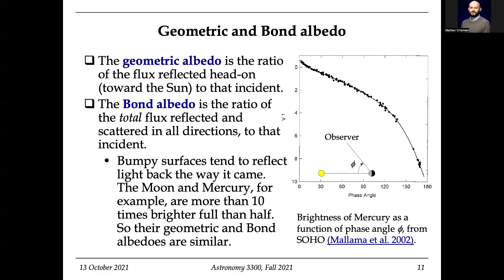Let's talk more about albedo and make it harder. The geometric albedo is the ratio of the flux reflected head-on to that of the incident. Let's draw it. The albedo assumes light is simply incident on an object — light bounces off and some fraction goes back. That is the simplest idea of albedo. Now what happens if I crumple the surface? Light may bounce in and bounce around before it bounces out.